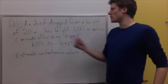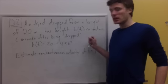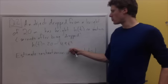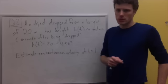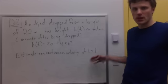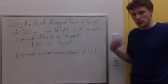Its height given t, its height in meters t seconds after it's dropped, is given by the equation 20 - 4.9t^2. I would like you to estimate the instantaneous velocity at time t equal to 1. Use the methods that we did in the previous problem to try to do this.